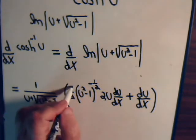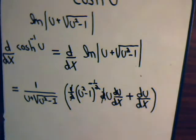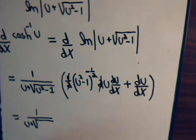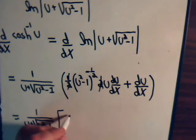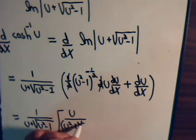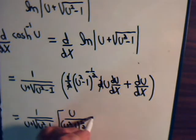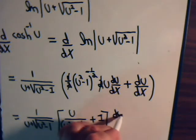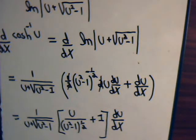The 2 times one-half cancels to give u, and this is a negative exponent, so we have 1 over u plus square root of u squared minus 1, times u over the square root of u squared minus 1, plus 1, all times du/dx.